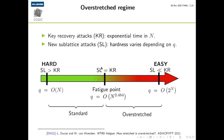So when we want to construct schemes based on NTRU, we have to choose the parameters in this safe region. If we choose above the FATIC point, we are in the overstretched regime and the security of NTRU is not the same. This means we are much more limited in our choice of parameters compared to RLWE.